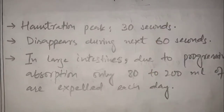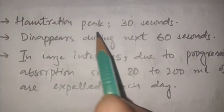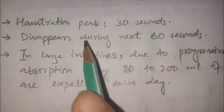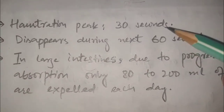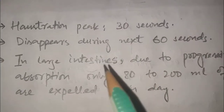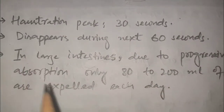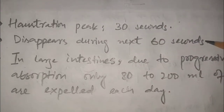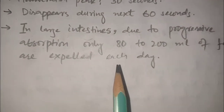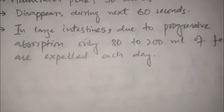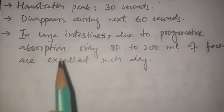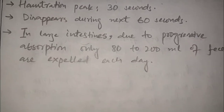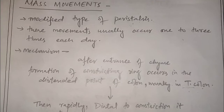Regarding haustration timing: the haustration peak is reached after 30 seconds, and then disappears during the next 60 seconds. Regarding absorption: in the large intestine, due to progressive absorption, only 80 to 200 milliliters of feces are expelled each day.